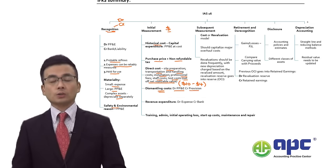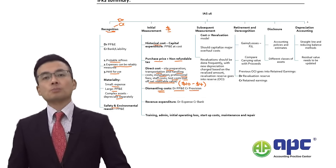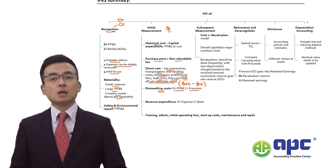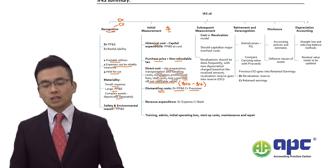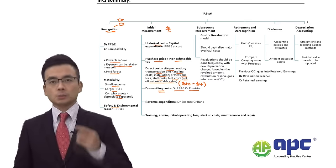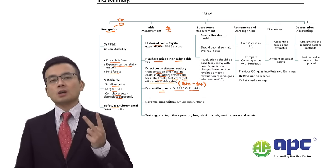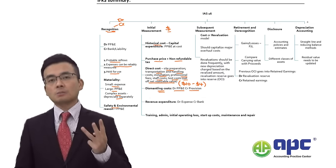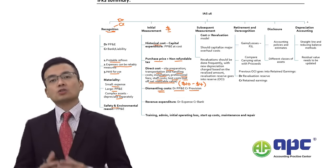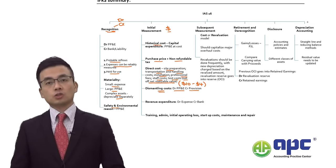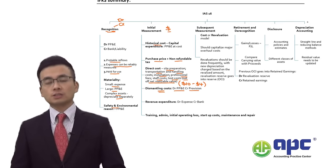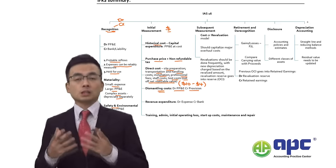The provision liability should comply with IAS No. 37 — provisions, contingent liabilities, and contingent assets — which requires probable cash outflow, a present obligation, and reliably estimable expenses. Subsequently, we recognize finance costs each year by debiting finance costs and crediting the present value of the provision liability.